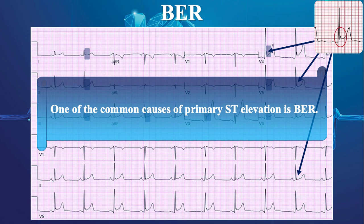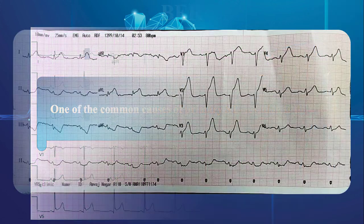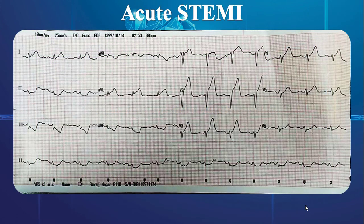The last strip demonstrates acute anterior ST elevation MI. There are obvious ST elevations in V1 to V4 with reciprocal ST depressions in inferior leads that highly favor acute ST elevation MI.